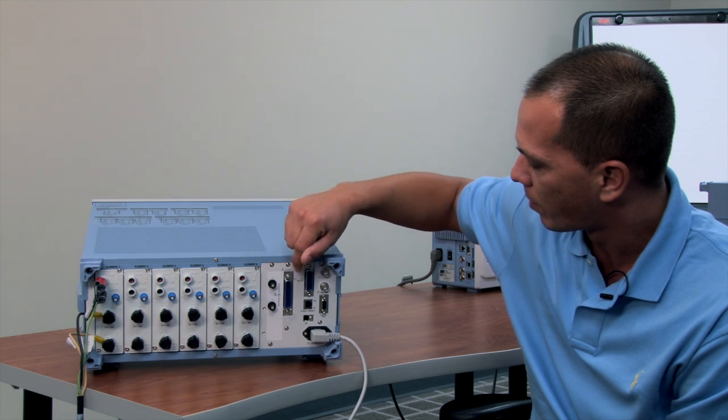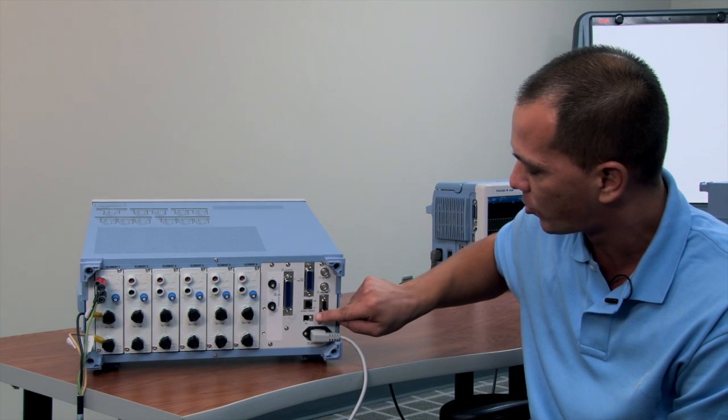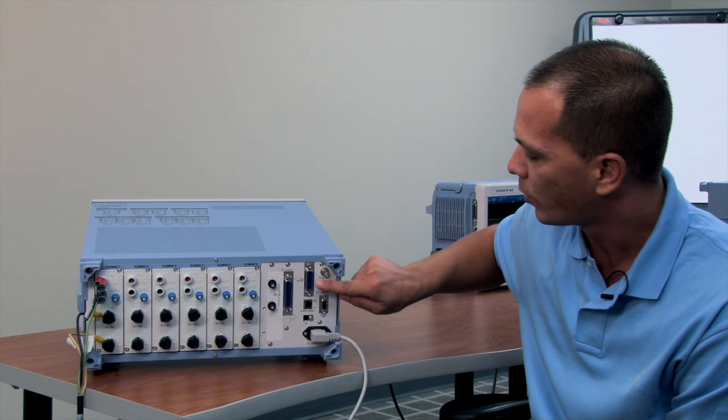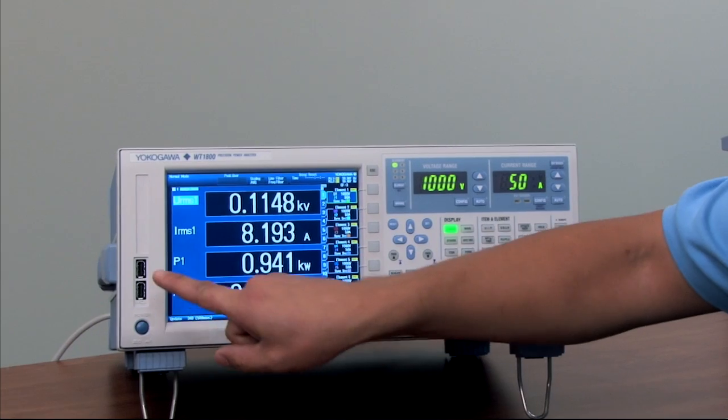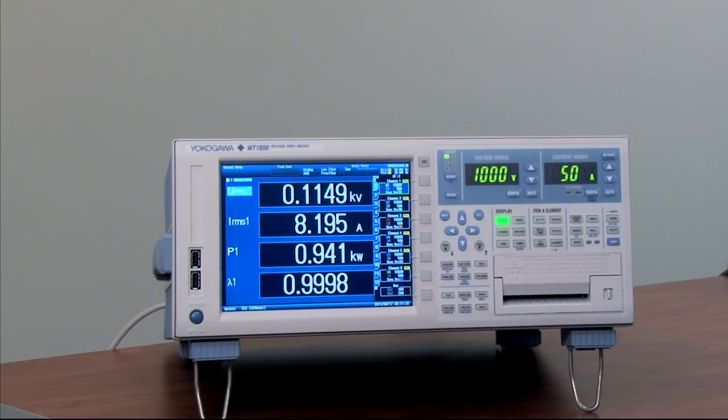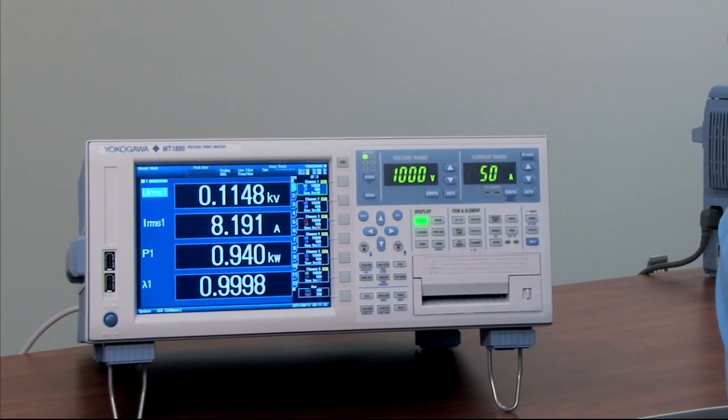The unit comes standard with three different interfaces to communicate with the instrument from a laptop or PC. You have GPIB, Gigabit Ethernet, or USB. There are two additional USB ports located on the front panel for peripheral devices such as USB stick, mouse, or keyboard.